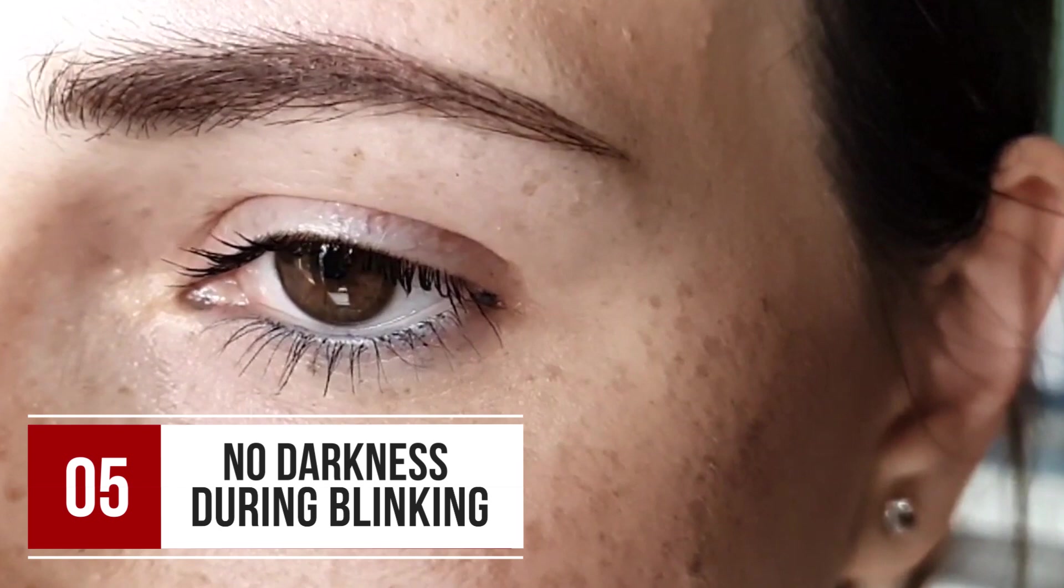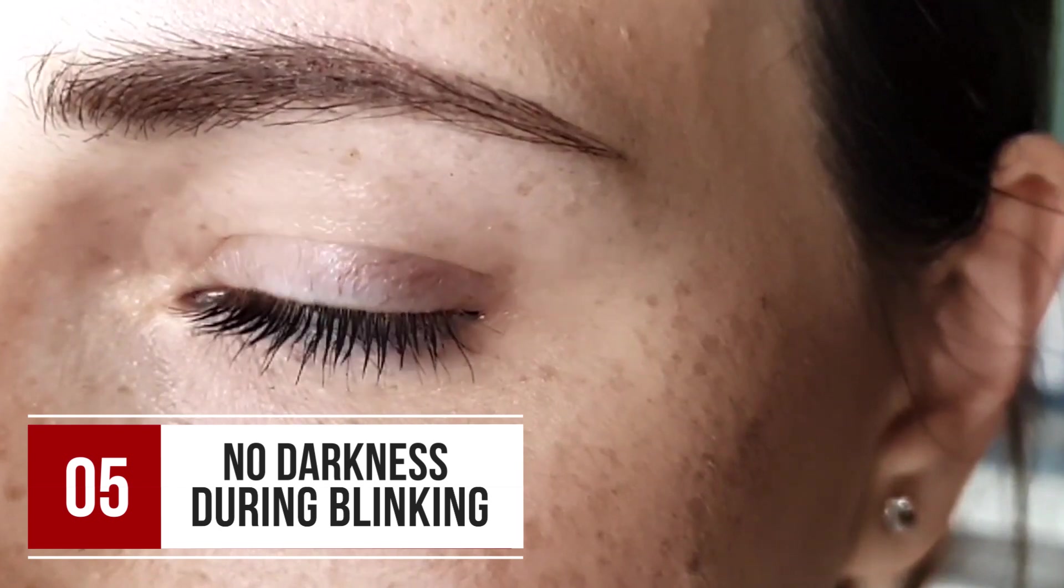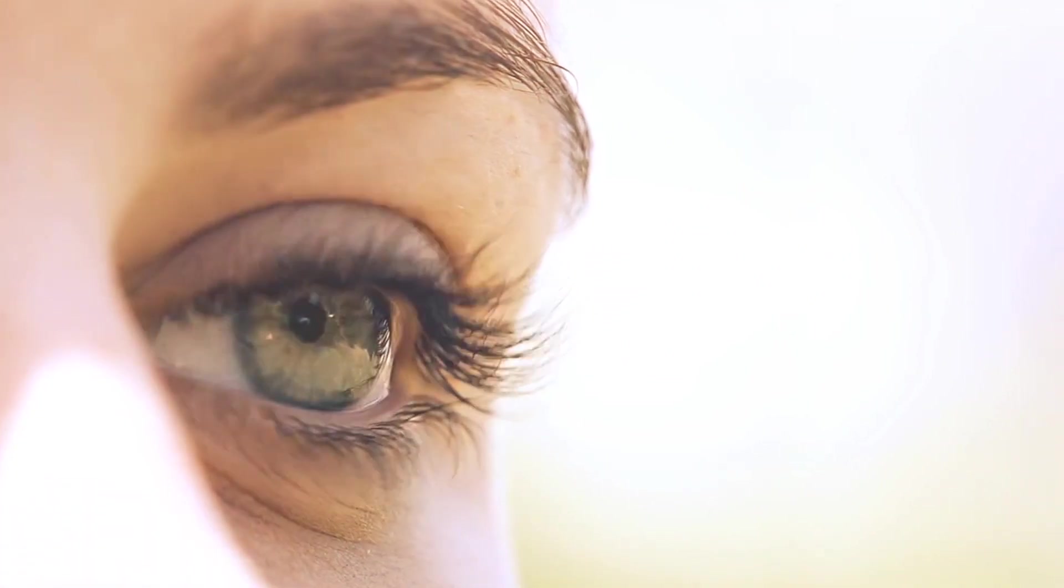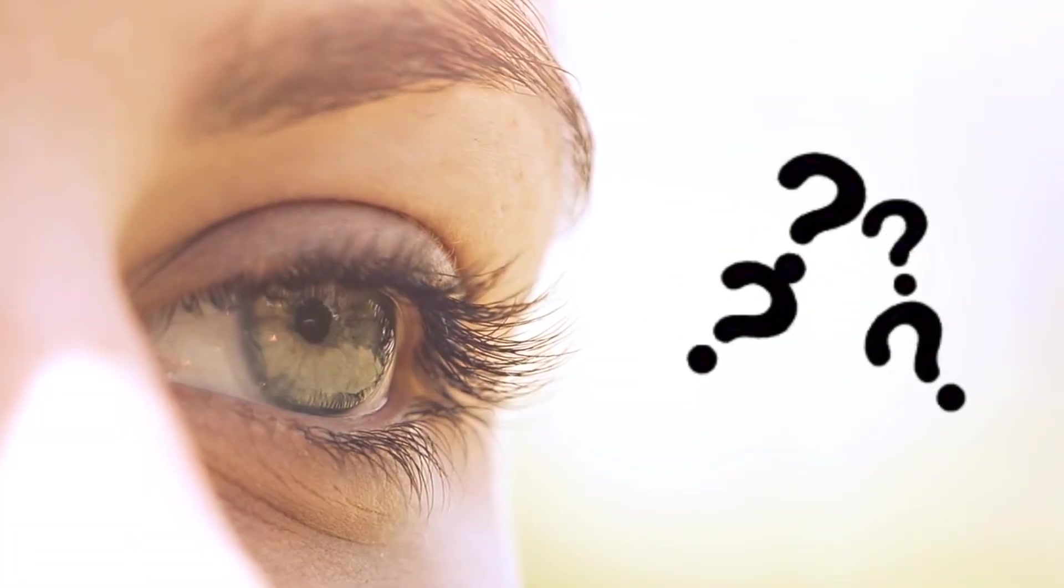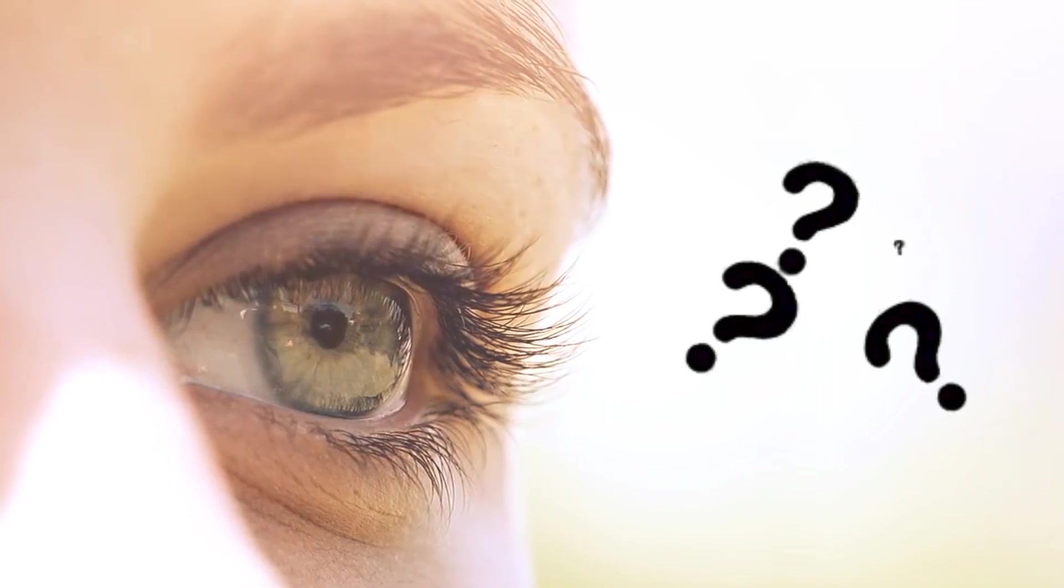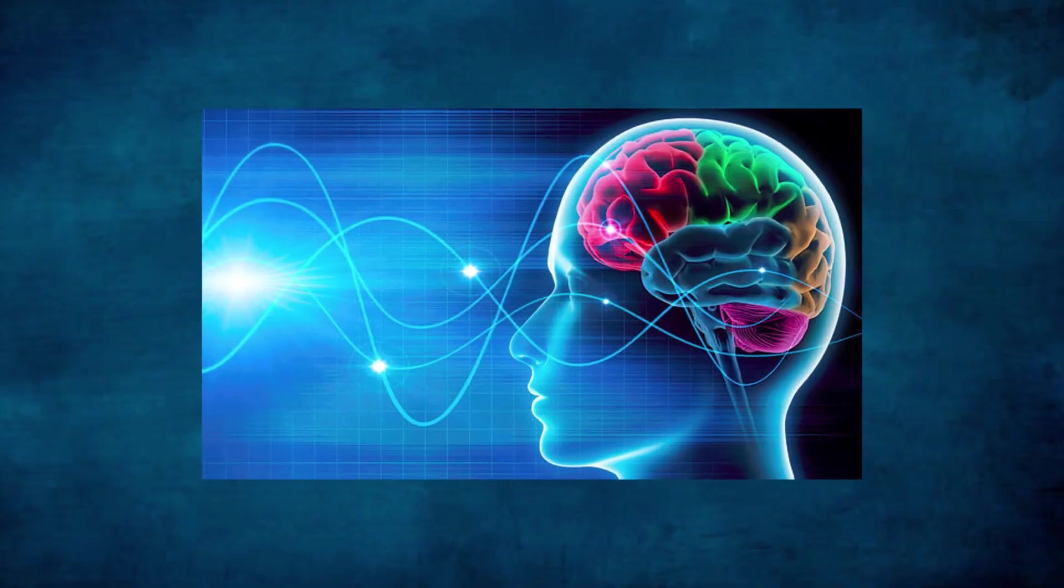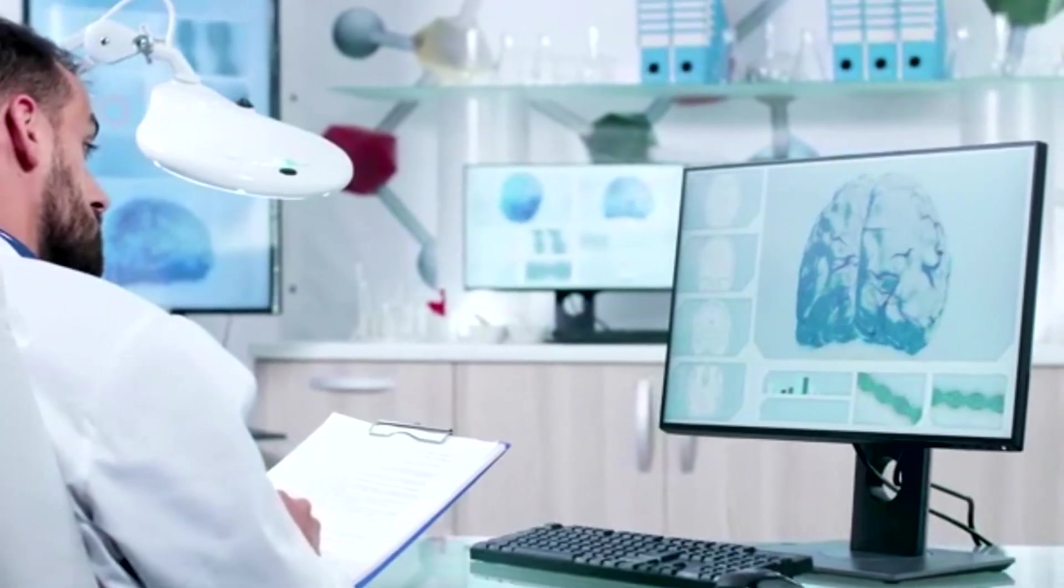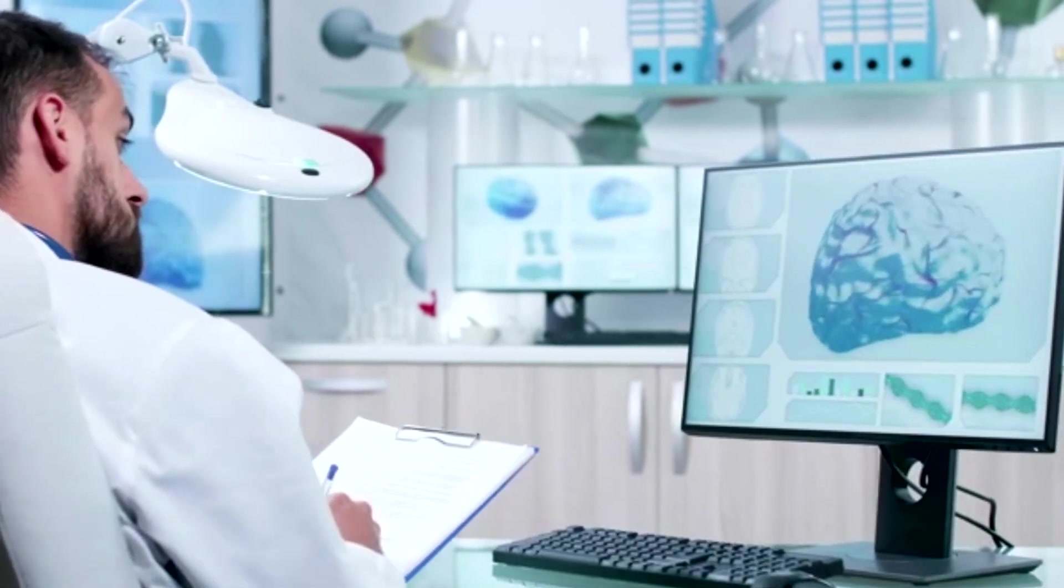Number 5: No darkness during blinking. We blink all day long, once about every five seconds. Why doesn't the world go dark in these moments? How do we perceive a continuous image?